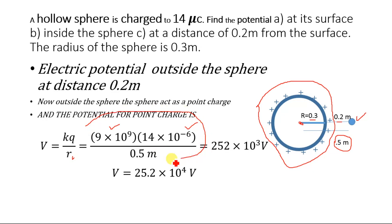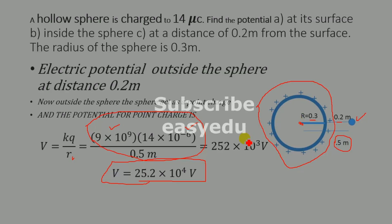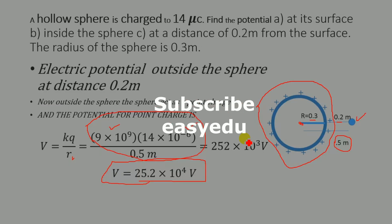Solving this, we get 252 times 10 to the power 3 volts, which is equal to 25.2 times 10 to the power 4 volts. This is the required answer — the electric potential at a distance of 0.2 meters from the surface of the sphere. Thank you for watching, and don't forget to subscribe to Easy Edu for more videos.